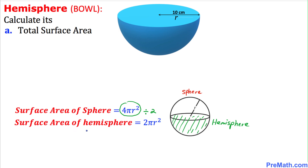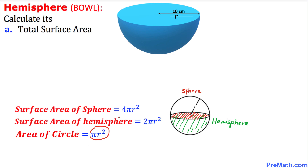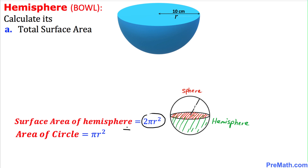So the surface area of this hemisphere is going to be 2πr². Since we are looking for the total surface area, we have to include this circle as well — the one I have shaded in red. The area of that circle is πr². So the total surface area is going to be 2πr² plus πr².